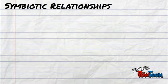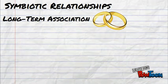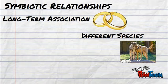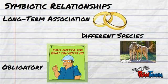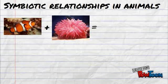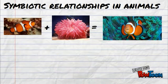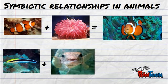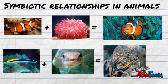A symbiotic relationship is a long-term association between two different organisms of different species. In many cases, their relationship is obligatory, and they live together for each of their own benefits. Symbiotic relationships are seen in tons of organisms, including the relationship between clownfish and sea anemones for protection and food, and the relationship between cleaner wrasses and other fish for food and parasite removal.